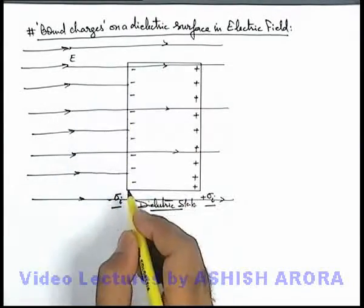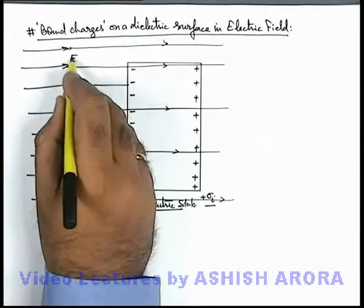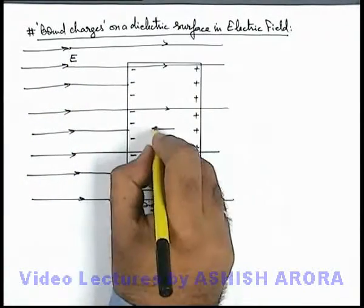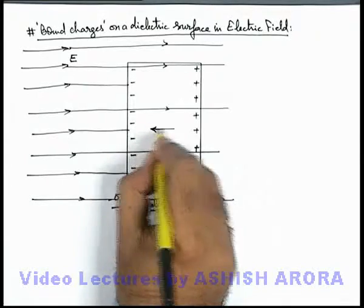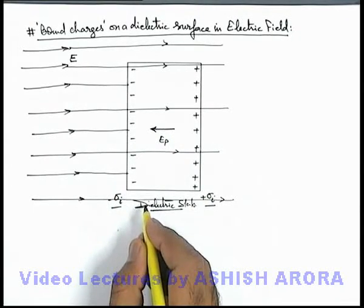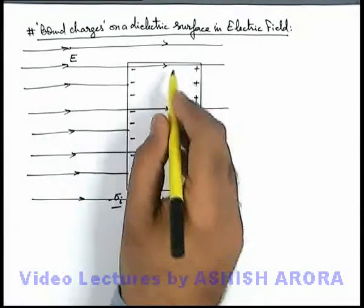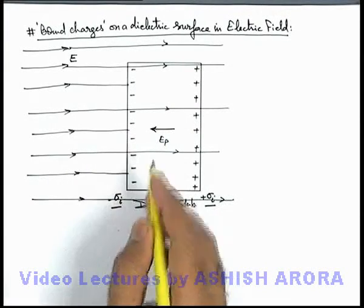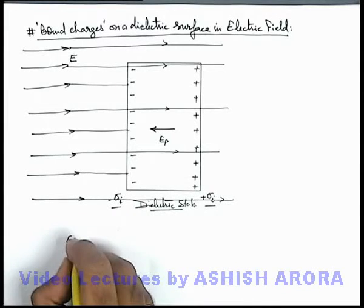In this situation we can see the external electric field is E, and due to these induced charges an opposite electric field Eₚ is developed which is called polarizing electric field in opposite direction, due to which the flux density within the dielectric slab decreases. So here we can say that electric field inside dielectric...